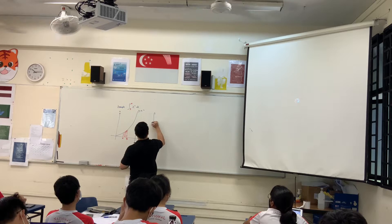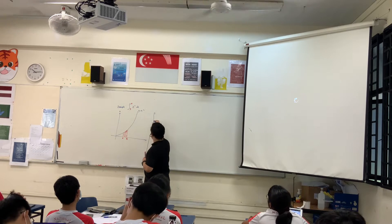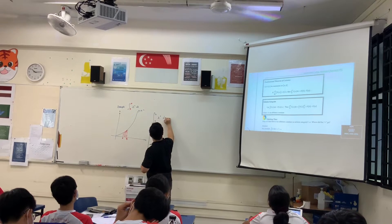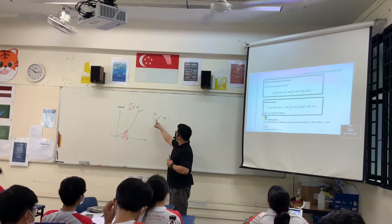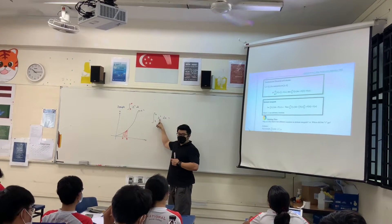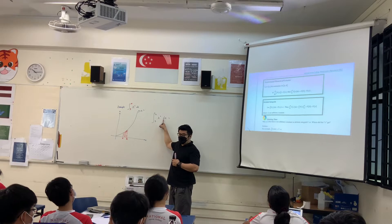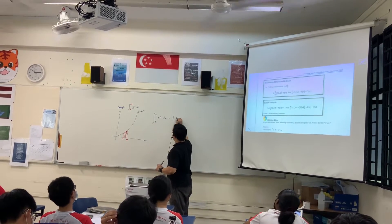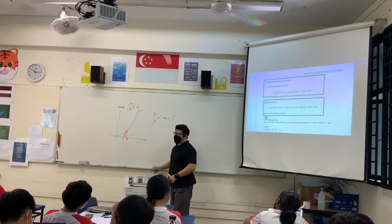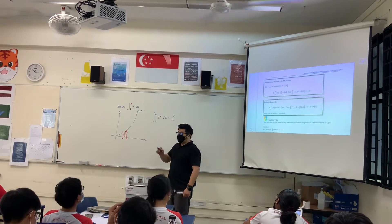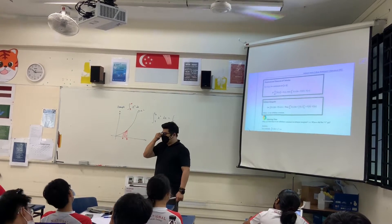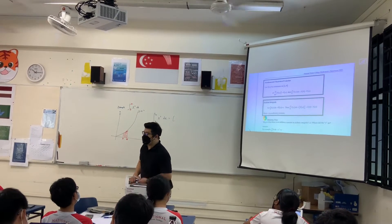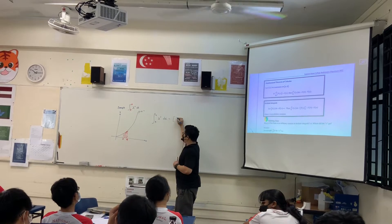So, the integral from 3 to 4 of x squared dx. This is: integrate x squared with respect to x. I'll do the same — I integrate. So, integrate x squared, what will I get?